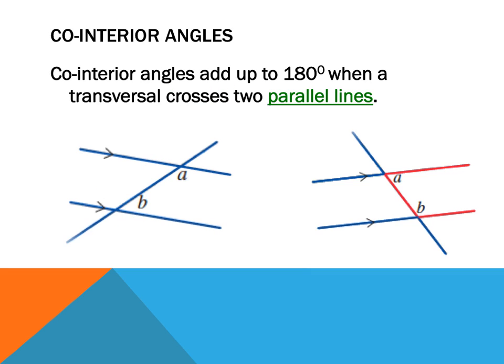The last angles that form when a transversal cuts parallel lines are co-interior angles. Co-interior angles add up to 180 - they're not equal like the other two, they add up to 180 - and they form this little C. So they're tucked in here in these two, and when you look at them they almost look like they form part of a C. They add up to 180.